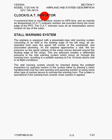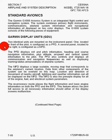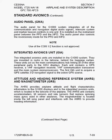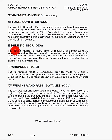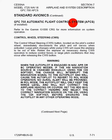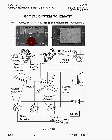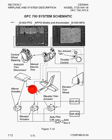Next we've got standard avionics: Garmin display units, the audio panel, integrated avionics unit, the AHARS or attitude and heading reference system, the magnetometer, air data computer, engine monitor, transponder, XM weather, and radio data link. The GFC-700 automatic flight control system — basically the autopilot. Here we can see a diagram: you've got two displays in the cockpit, your control yoke with buttons that control the autopilot, and the autopilot actuates the surfaces via an elevator actuator or aileron actuator. This is really very straightforward.